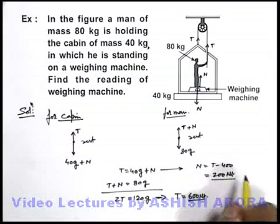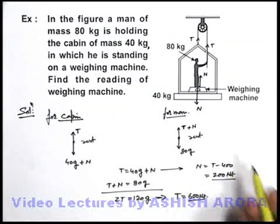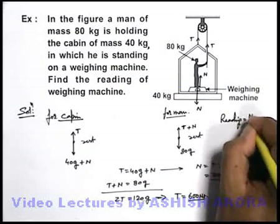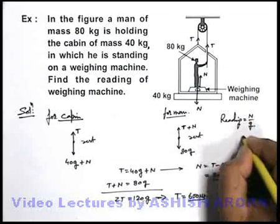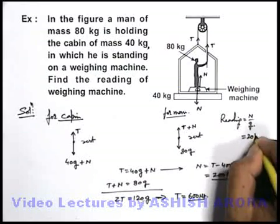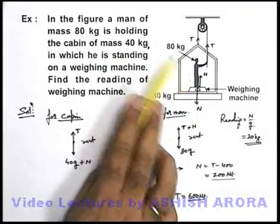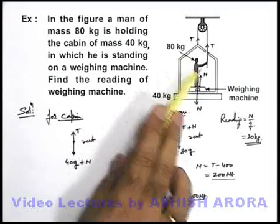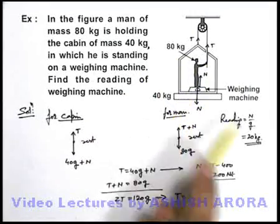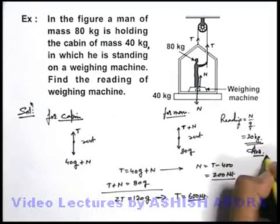Since the normal reaction acting on the weighing machine is 200 newtons, the reading of the weighing machine = N/g = 200/10 = 20 kilograms. The actual mass of the man is 80 kilograms, but due to this pulley-cabin system the reading shown by the weighing machine is only 20 kilograms. This is the answer to this question.